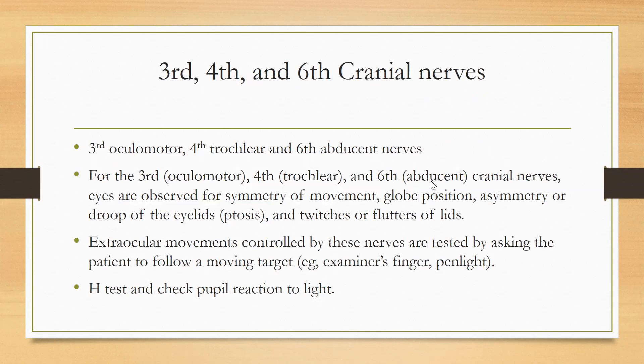Number three, four, and six — the third, fourth, and sixth cranial nerves can be tested together because all their functions are similar. Basically, we are checking eye symmetry, globe position asymmetry, drooping of eyelids, and twitching or fluttering of lids. So we can test third, fourth, and sixth together. The third is oculomotor, the fourth is trochlear, and the sixth is abducent nerve.